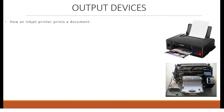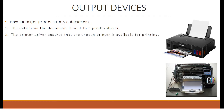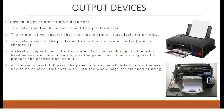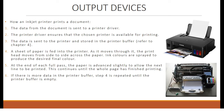How an inkjet printer prints a document: The data from the document is sent to a printer driver, which ensures that the chosen printer is available for printing. The data is then sent to the printer and stored in the printer buffer (refer to chapter 4). A sheet of paper is fed into the printer; as it moves through, the printhead moves from side to side across the paper, and ink colors are sprayed to produce the desired final color. At the end of each full pass, the paper advances slightly to allow the next line to be printed. This continues until the whole page has finished printing. If there is more data in the printer buffer, this step is repeated until the buffer is empty.